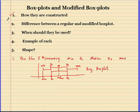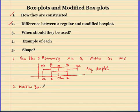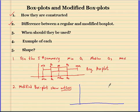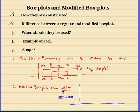The only difference between a regular box plot and a modified box plot is that the modified box plot shows outliers. If you don't know what an outlier is, make sure you watch that video. Modified box plots show outliers as dots or symbols outside the whiskers.